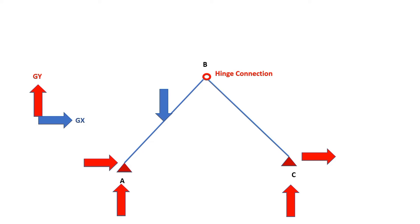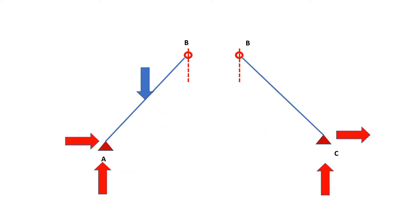Since this is a perfectly determinate structure, this also means the structure is just stable. That means if we remove any one of the reactions — for example, if we make one pin support a roller support — then this structure would become unstable. There is another comment I would like to make on the use of equations of equilibrium. To understand the discussion on stability, it is important that you revisit the session where I discussed degree of indeterminacy and stability of structures in detail; the link is appearing on the top right of your screen right now. There was a three-episode discussion on this, and you can click on the link appearing on screen to view the first part.